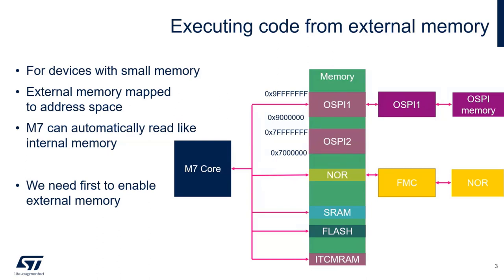For this we will use OctoSPI 1, which is directly connected on our board. It's possible to configure this memory so that it will be visible inside the Cortex memory space at address 0x90000000. In our case today it will be OctoSPI 1. There is also OctoSPI 2, which is at 0x70000000, currently used for SRAM or SDRAM, but in our case it's OctoSPI.